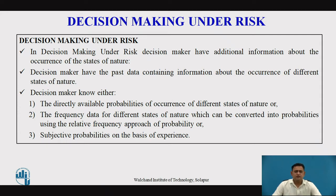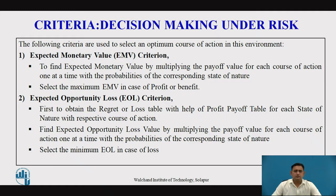Either he will assign the probability on the basis of experience. Coming to the next point, the criterias for decision-making under risk: there are two criterias — the first is the expected monetary value criteria and the second is expected opportunity loss.